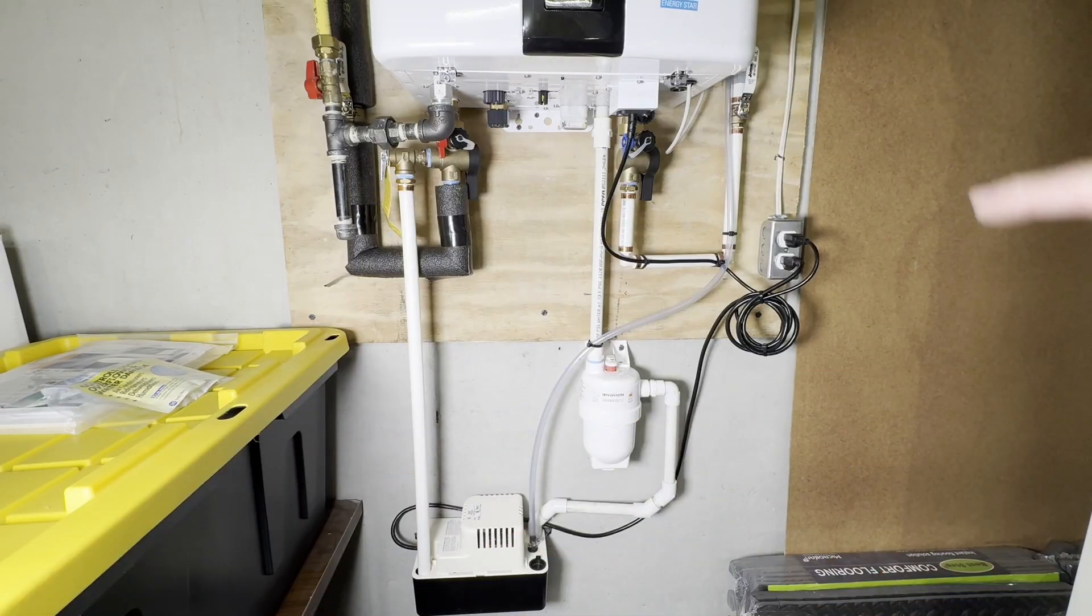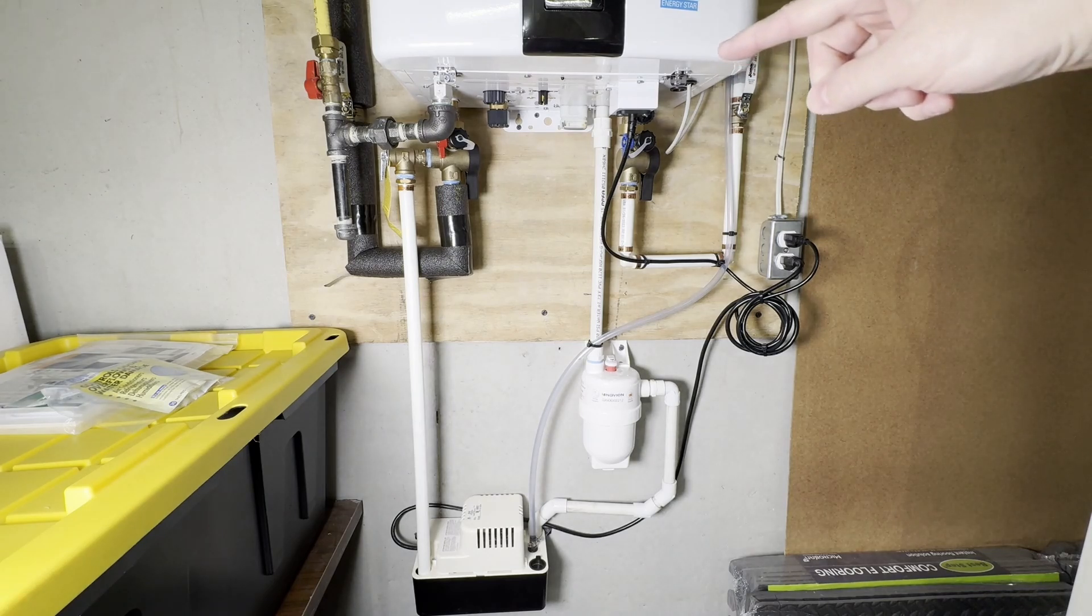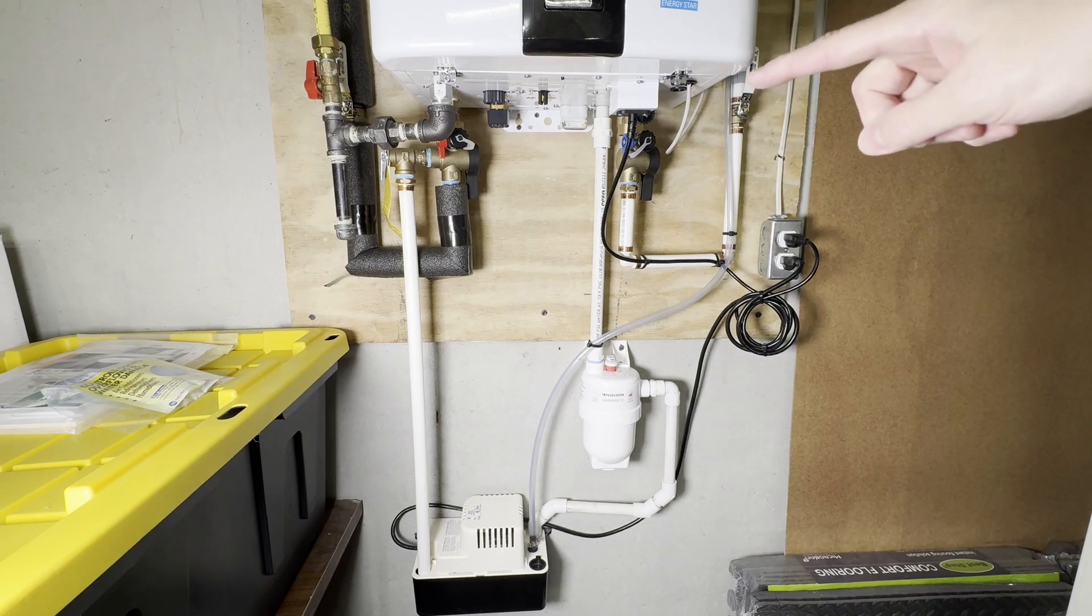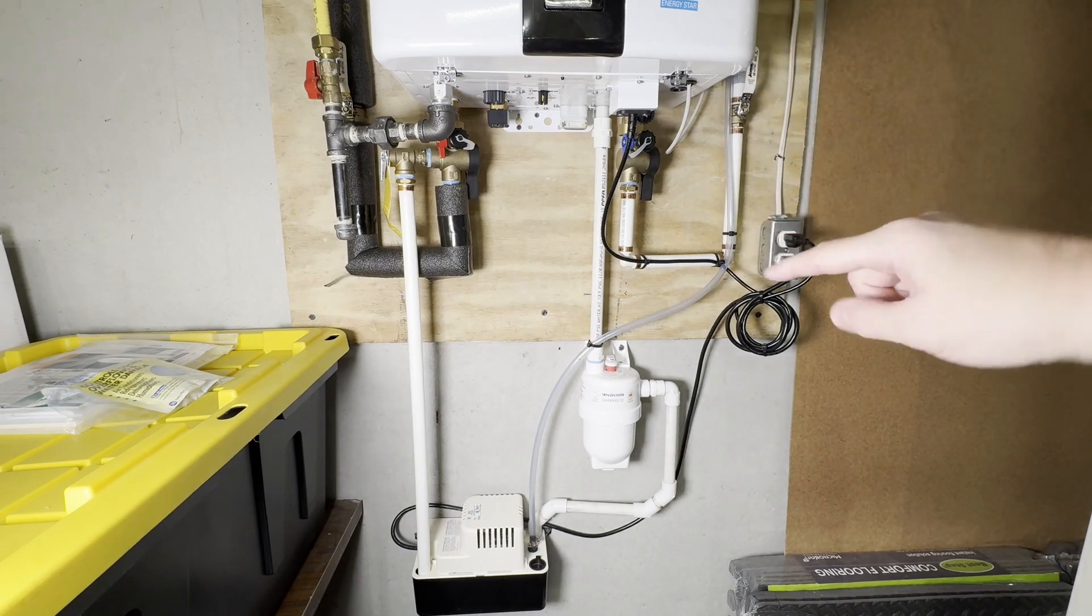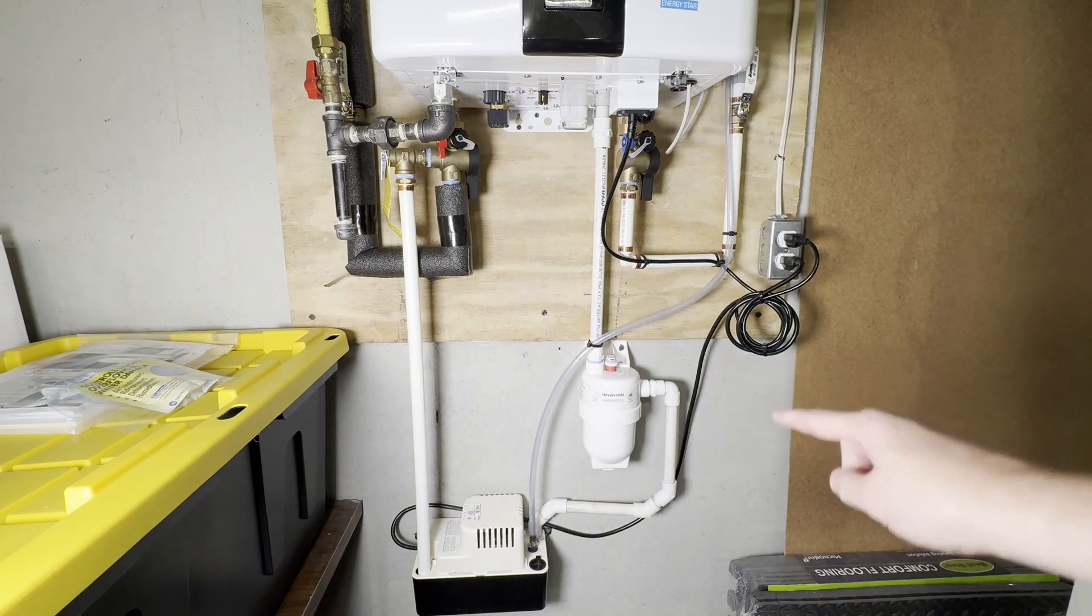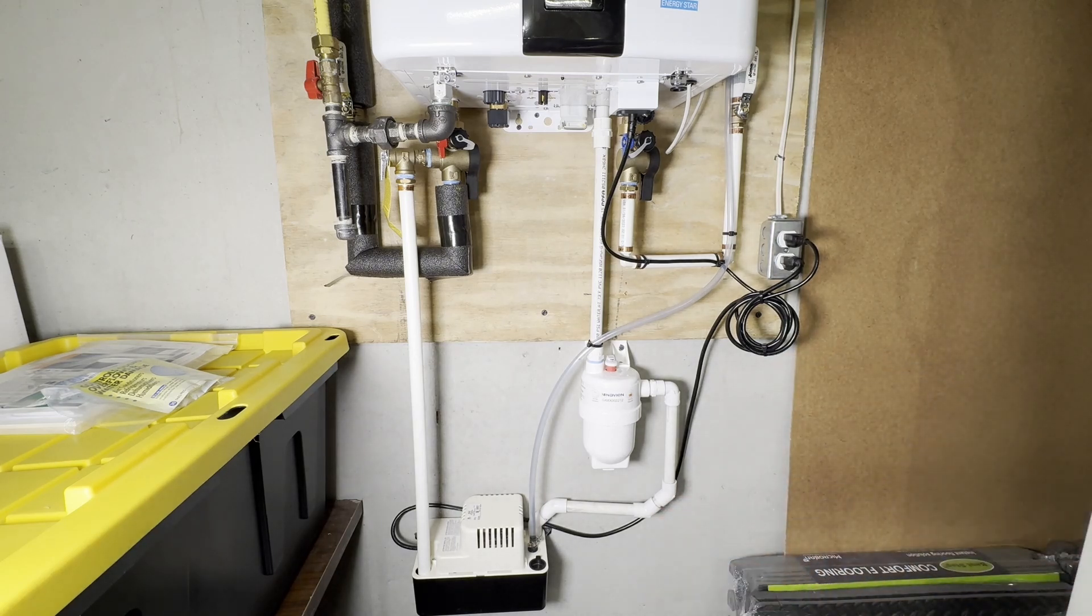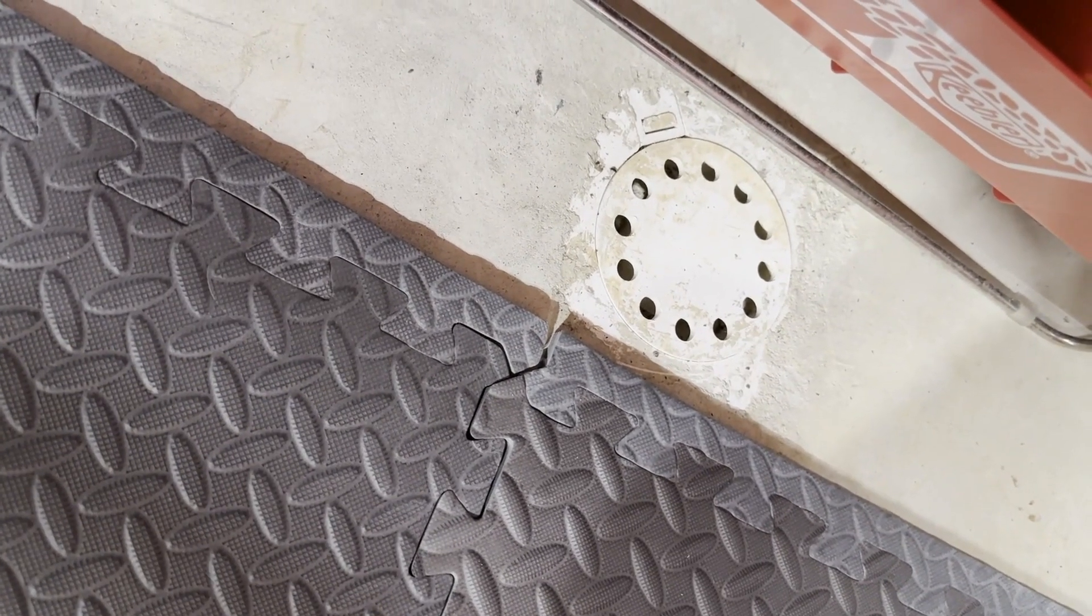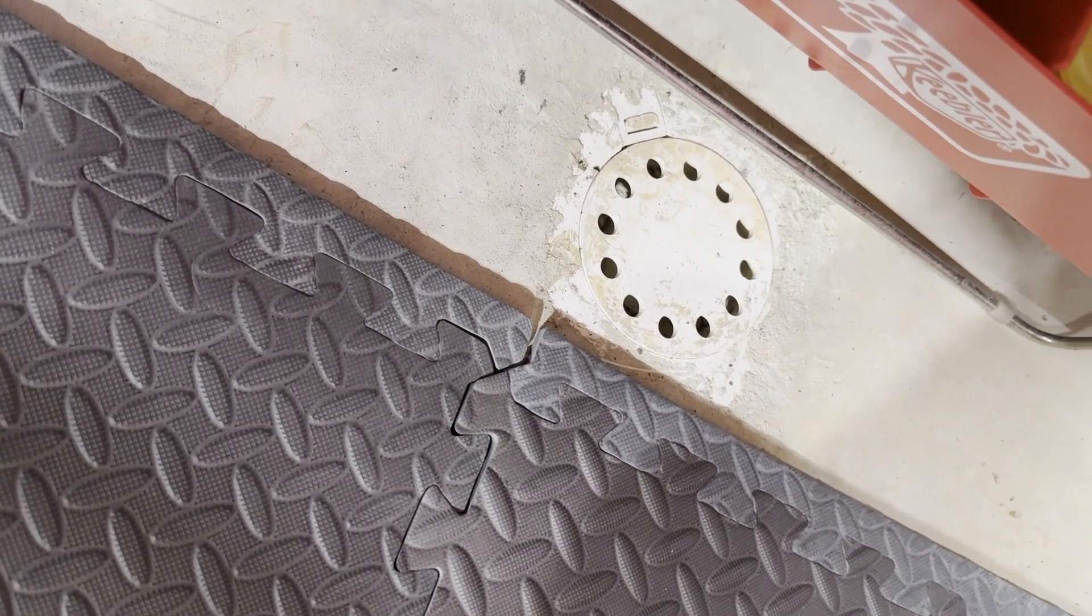The concept is the tankless water heater is very efficient and creates very acidic condensate. When it comes down into this acid neutralizer, it's supposed to neutralize the acidity in the water before sending it out to the sewer, because it could damage metal pipes. I have PVC for my sewer pipe, but this may also be code in my area or your area, which is why they installed it. Your unit may be dumping directly into a floor drain without an acid neutralizer.